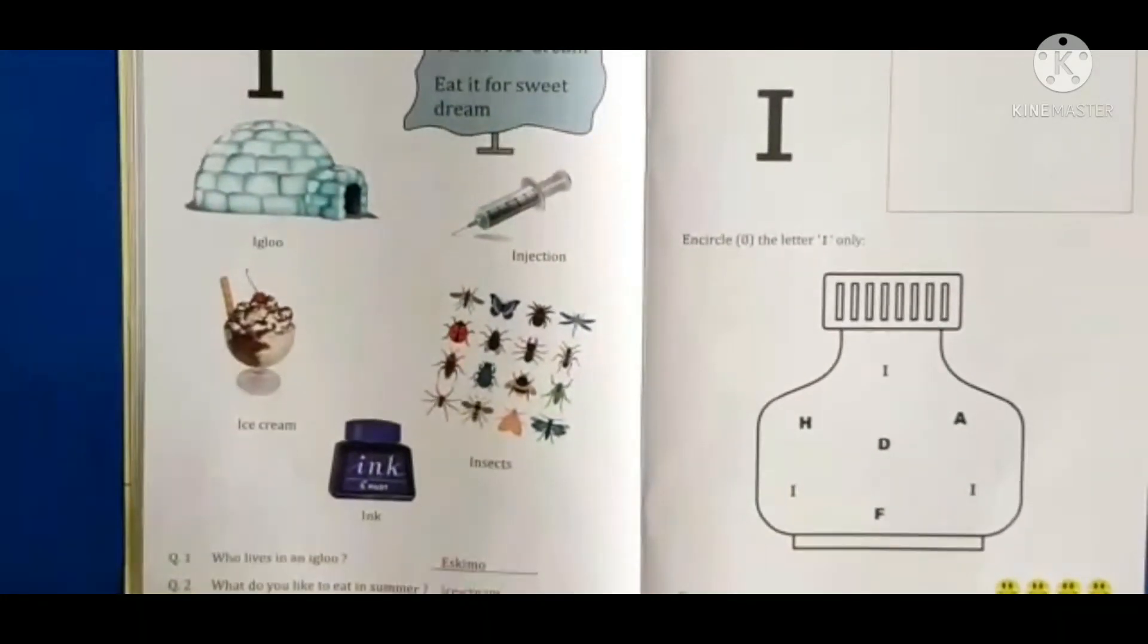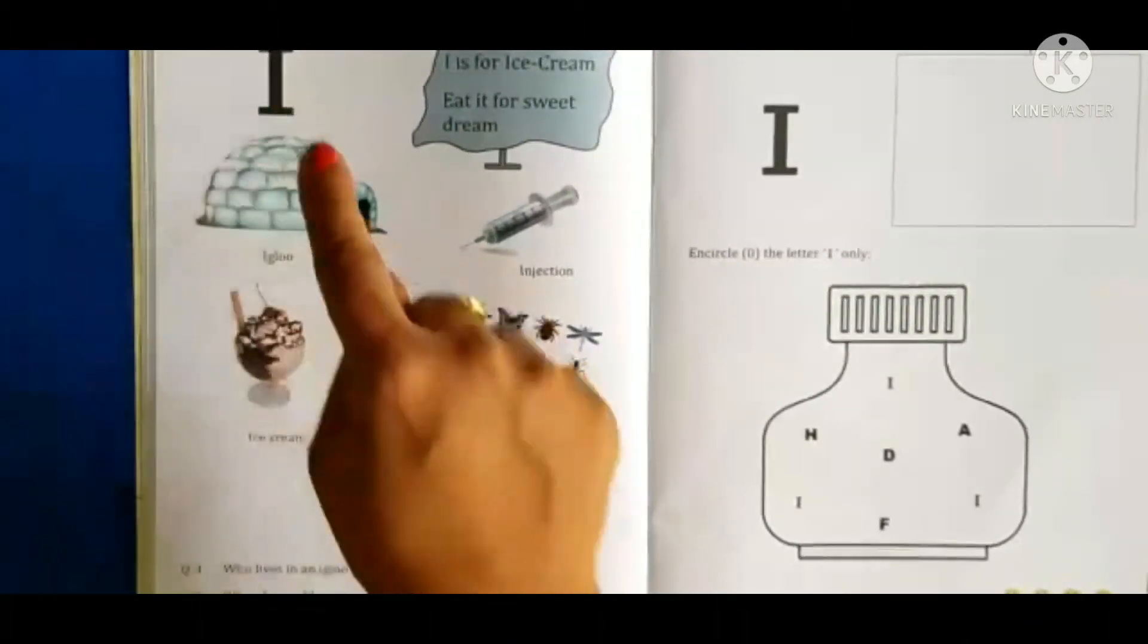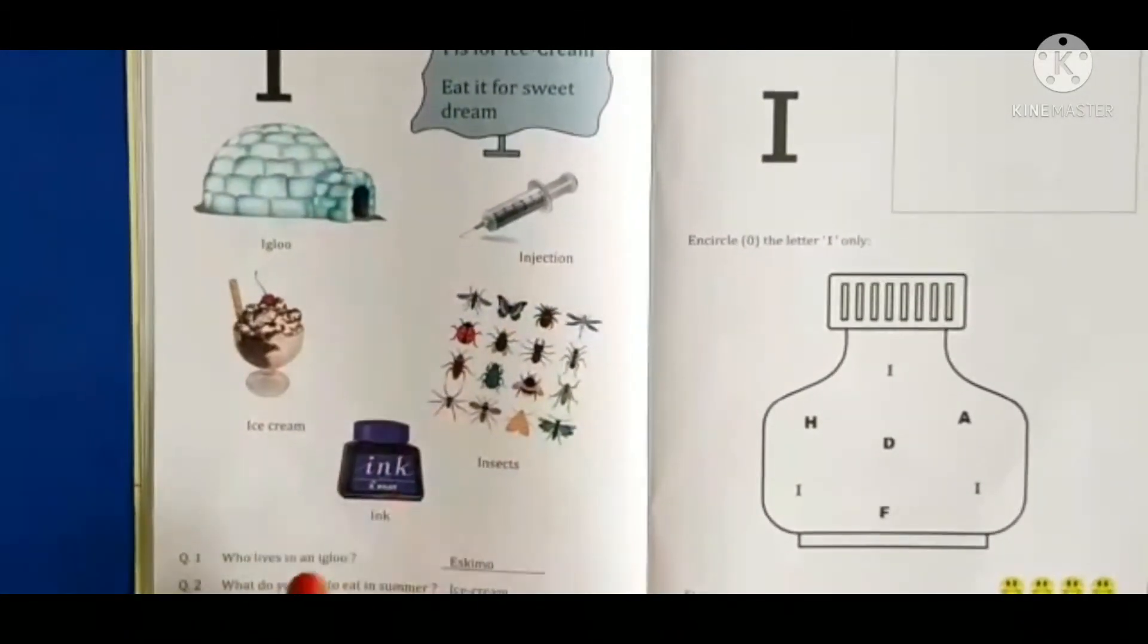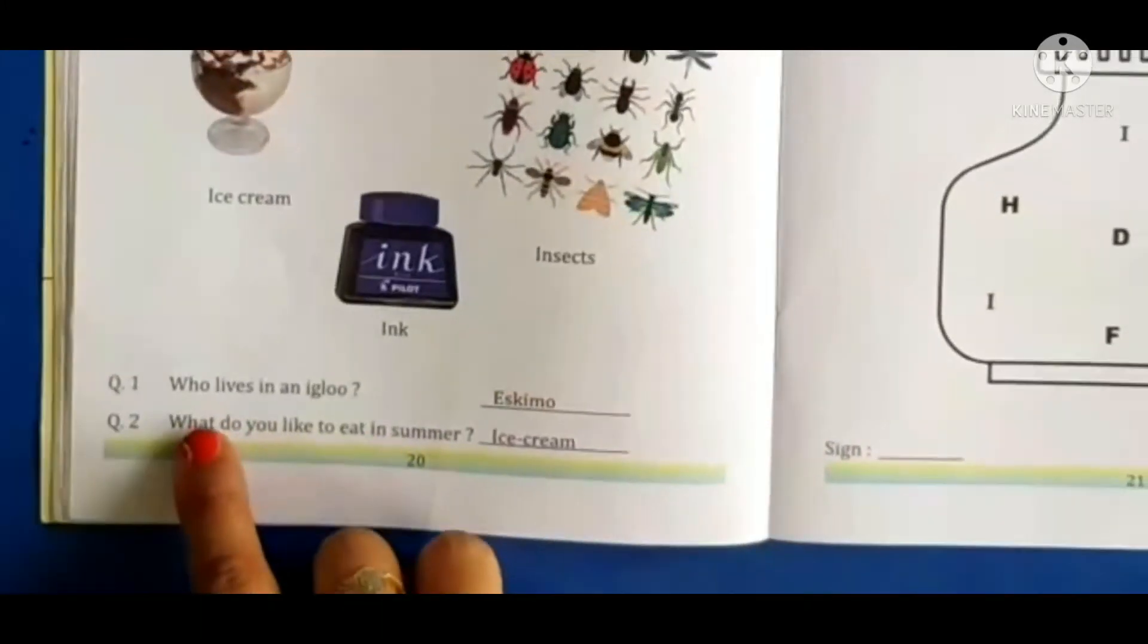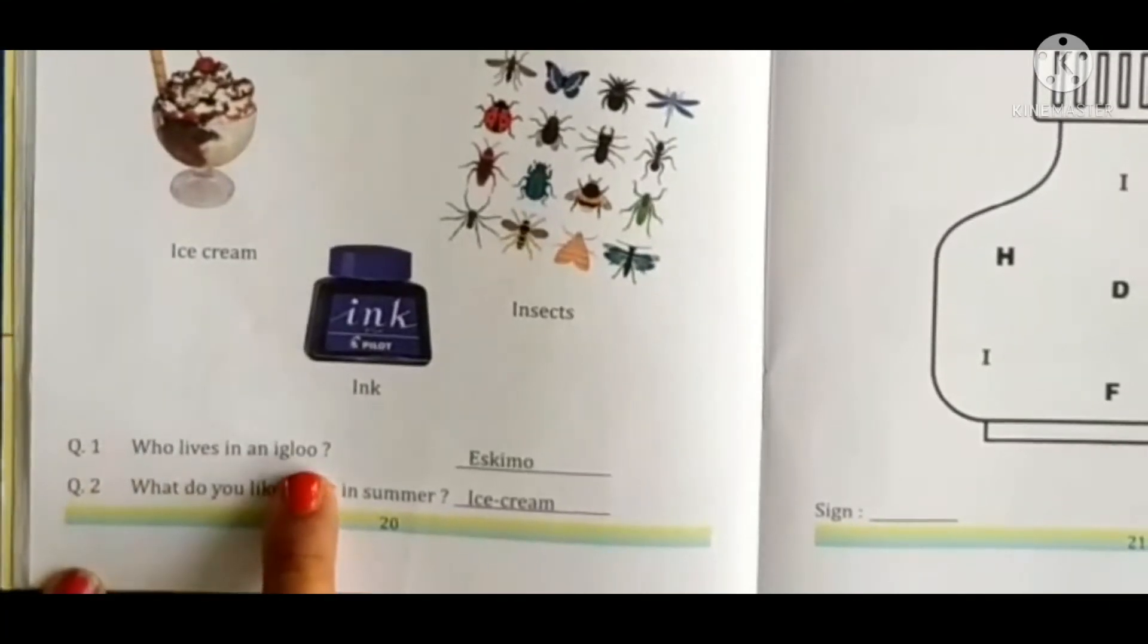We will use that in just look through paint. So I for ink pot. Now let's see what is written here. Question 1: Who lives in an igloo?